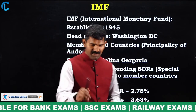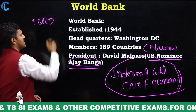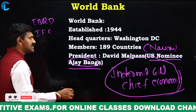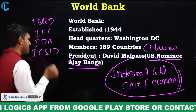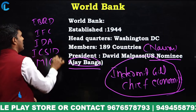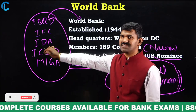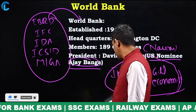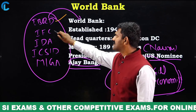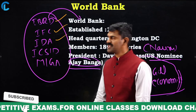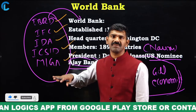Indermit Gil is the chief economist of World Bank — he is the second person from India to hold this position, after Kaushik Basu. The World Bank is not a single institution but a group of five divisions: International Bank for Reconstruction and Development (IBRD), International Finance Corporation (IFC), International Development Association (IDA), International Centre for Settlement of Investment Disputes (ICSID), and Multilateral Investment Guarantee Agency (MIGA). Together these form the World Bank Group.